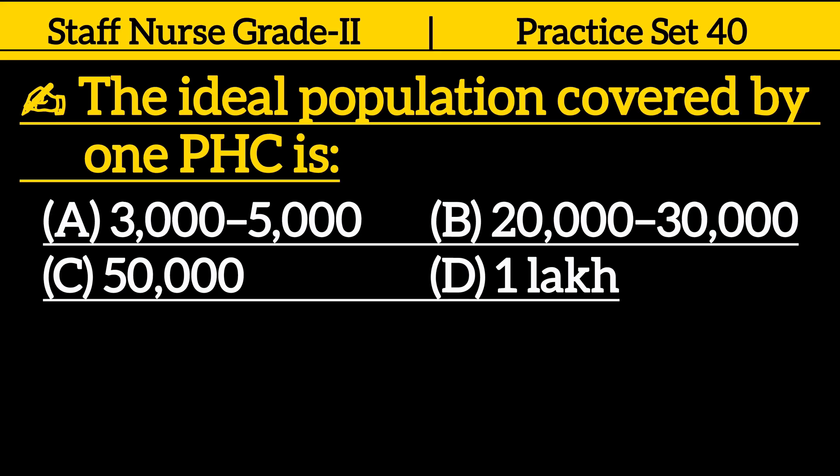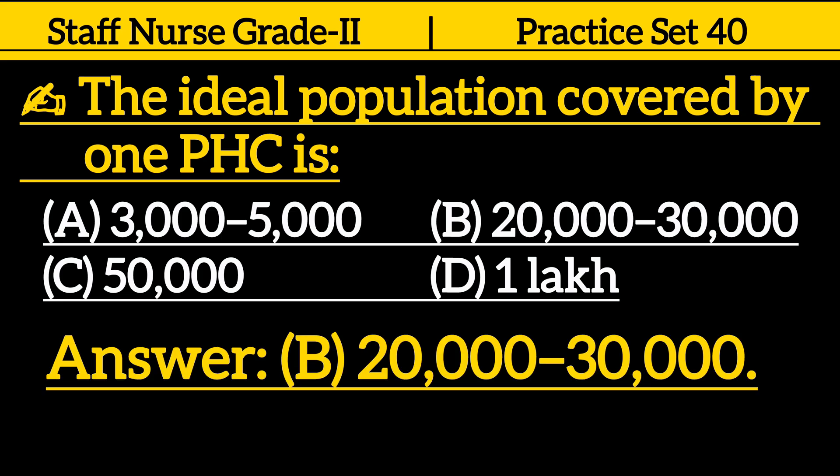The ideal population covered by one PAC: Option A. 3,000 to 5,000. Option B. 20,000 to 30,000. Option C. 50,000. Option D. 1,000,000. Correct answer is Option B. 20,000 to 30,000.